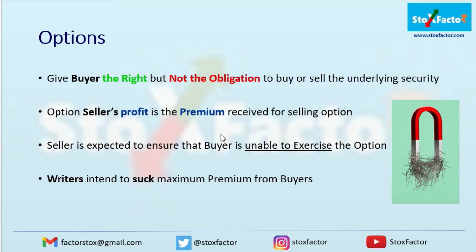The seller is expected to ensure that the buyer is unable to exercise the option. Sellers are generally smart people with large amounts of money and resources, and they have information which retail people don't have. That's why they carry unlimited risk and write options, ensuring the buyer is unable to exercise. The maximum options should expire out of the money, so writers intend to suck maximum premium from buyers. At the start of expiry, the premium is maximum, and till the end, option contracts become obsolete because they are out of the money and the premium is almost zero.